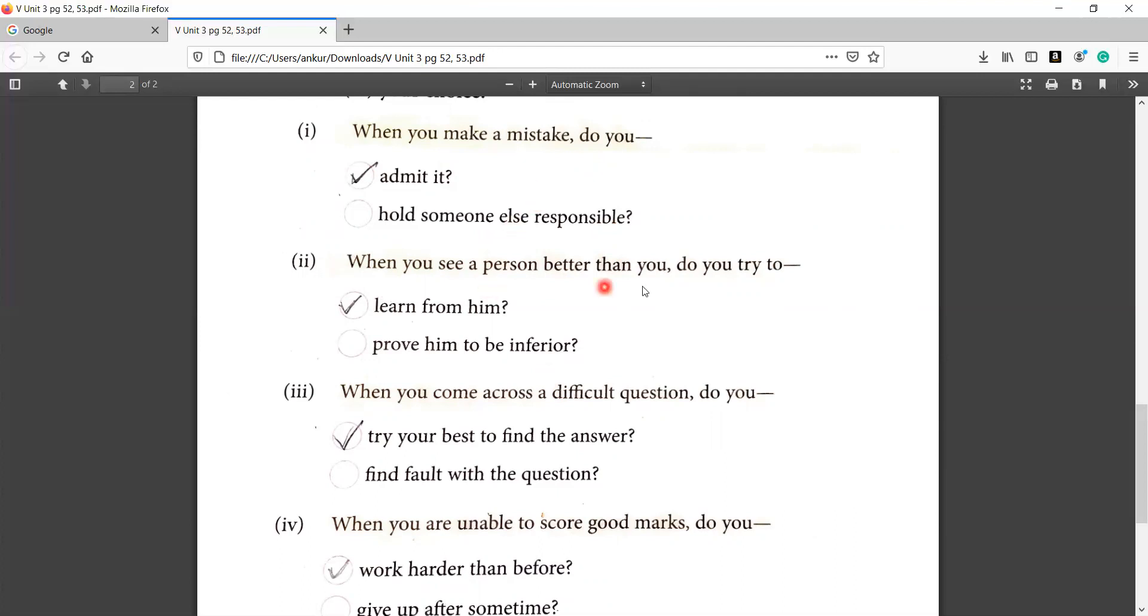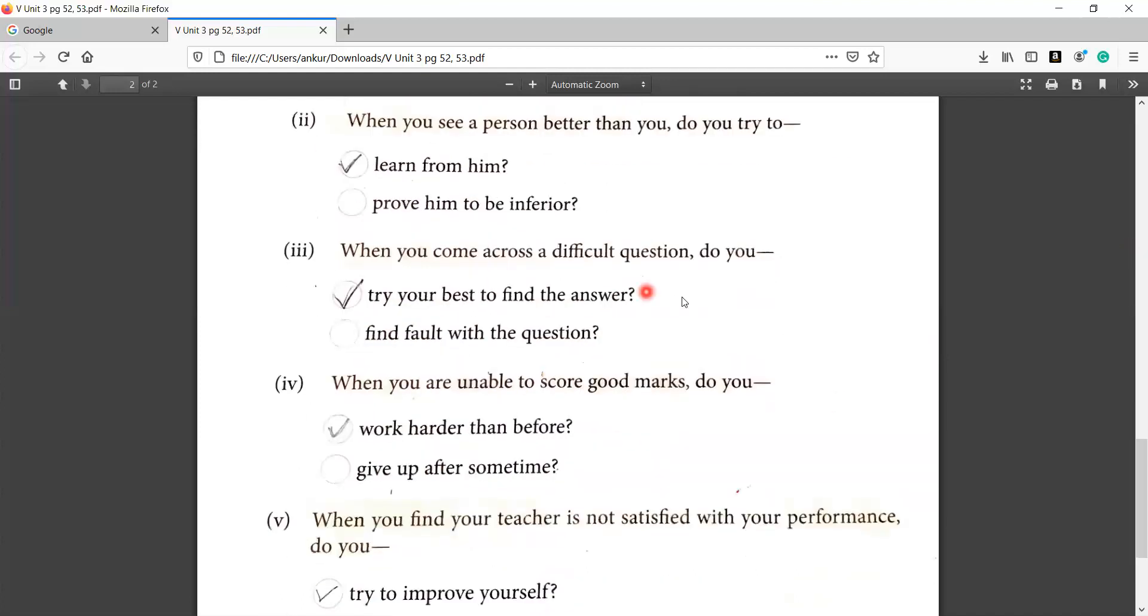Second is, when you see a person better than you, do you try to learn from him or prove him to be inferior? If you see a person better than you in your class, why do you do? You want to be like him or you will try to remove him. Obviously, you just want to learn from him. Third is, when you come across a difficult question, do you try your best to find the answer or find fault with the question?